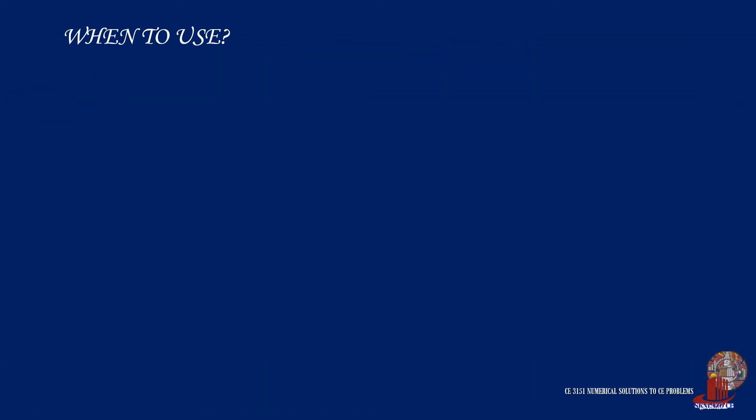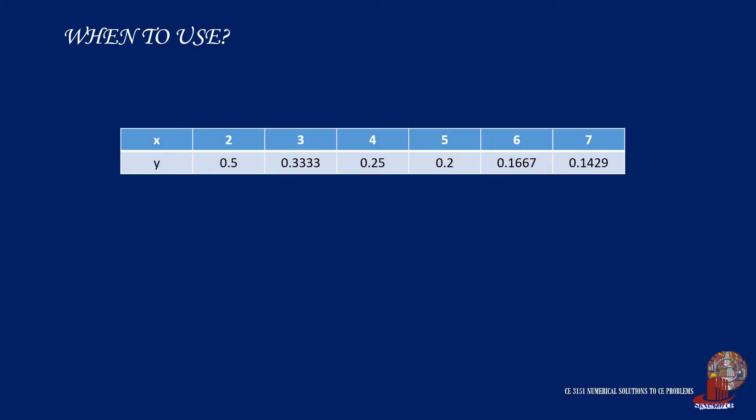There are some limitations to the use of forward Gregory-Newton interpolation. Let's identify these limitations through a dataset. Say we have a table for input x and output y. Check the x-intervals. Forward Gregory-Newton can only be used when the x-interval is regular or equal, say h.